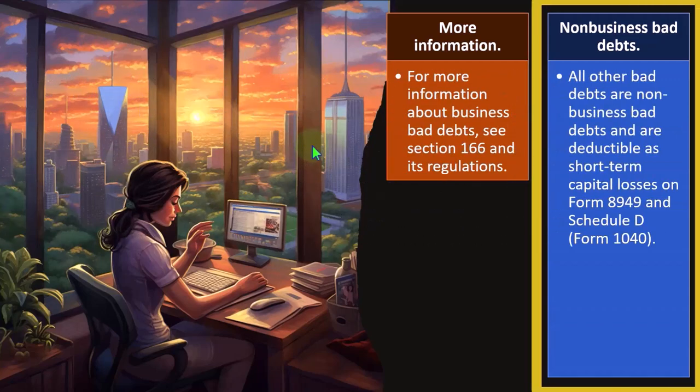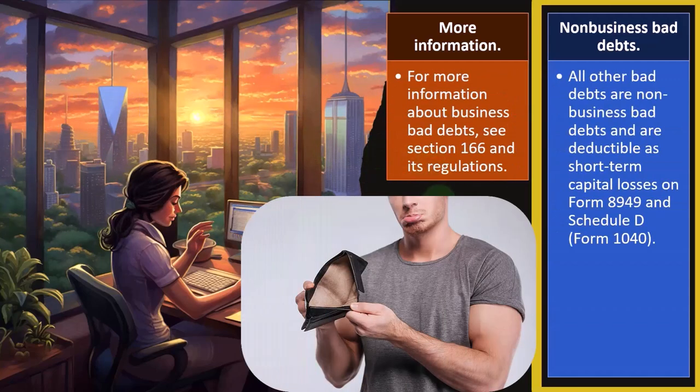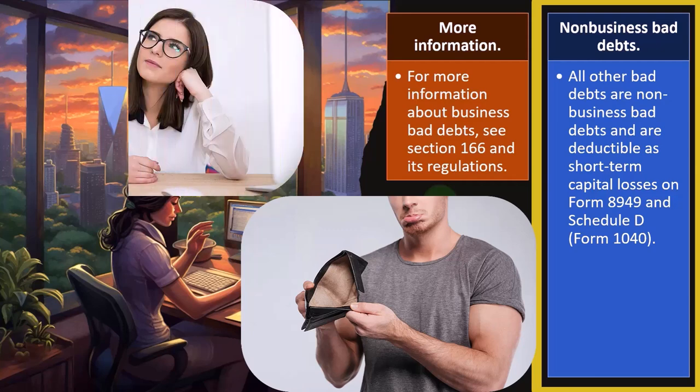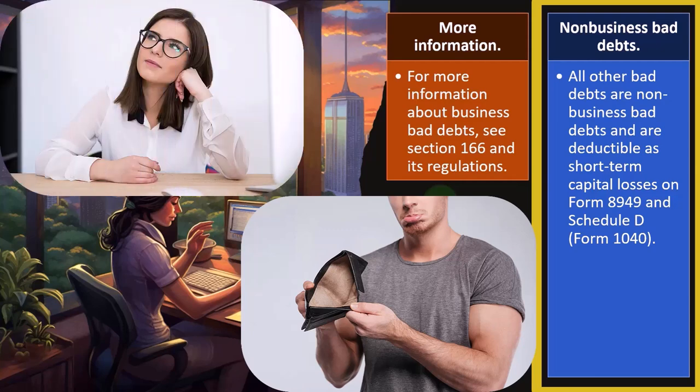Non-business bad debts — all other bad debts that are not business-related — are deductible as short-term capital losses on Form 8949 and Schedule D. If it's not business-related, you'll need to go to the personal side of things to see whether you can deduct it there, which is largely outside the scope of our main focus here, since our major thought process is those debts that are business related.